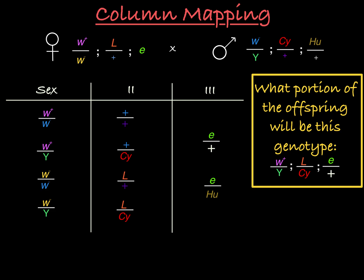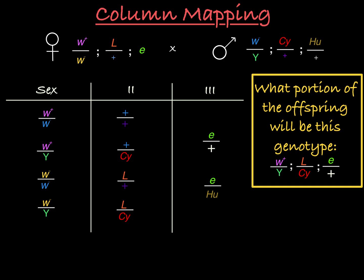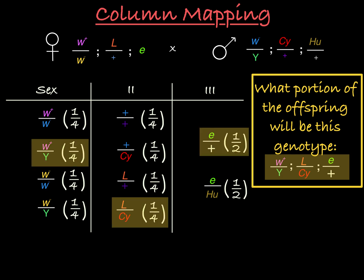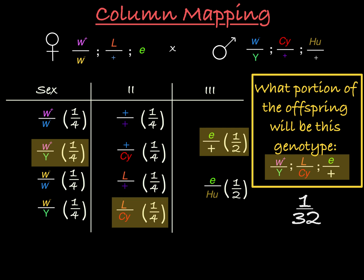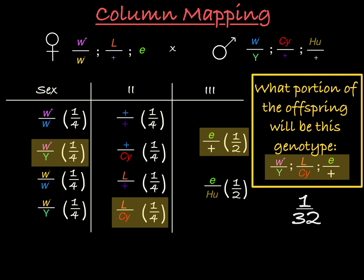If I want to know the chance of a specific genotype occurring, I can find that out by looking at the column map. For example, for an offspring with the genotype W plus over Y, lobe over curly, and ebony over plus: W plus over Y occurs in one quarter of offspring, lobe over curly occurs in one quarter of offspring, and ebony over plus occurs in one half of offspring. So one quarter times one quarter times one half is one in 32. One in 32 offspring will have this genotype.